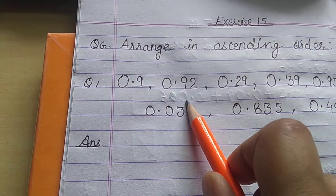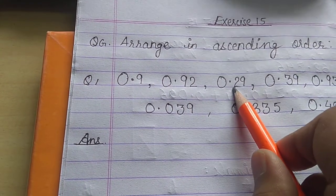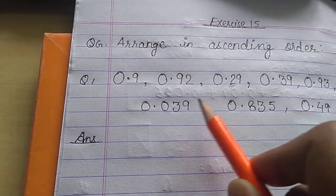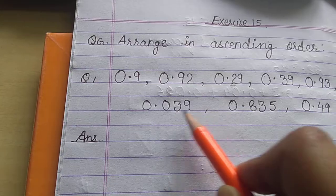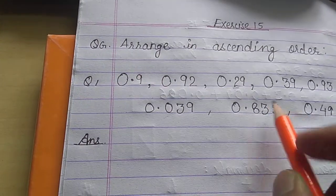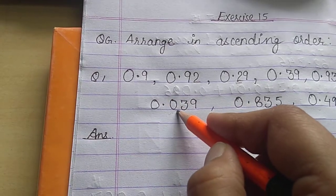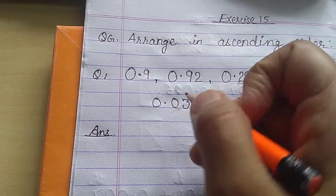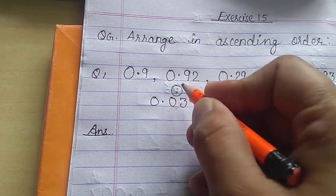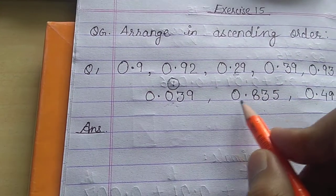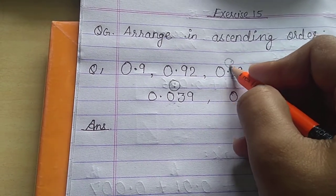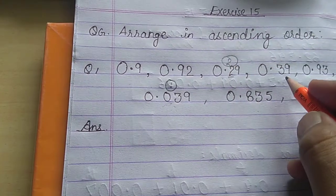Looking at the tenths digit of each number: we have 9, then 9, then 2, then 2, then 3, then 9, then 0, then 8, and then 4. So just after the decimal, we have 0 here. So the smallest decimal number will be this one. After 0, we have 0.2, which will be the second smallest decimal number.